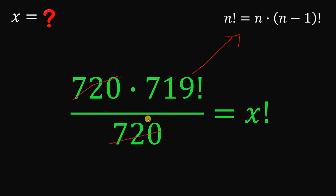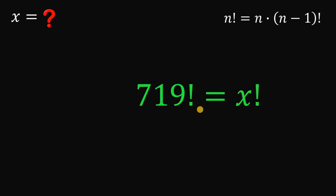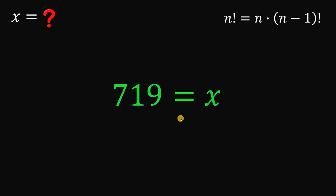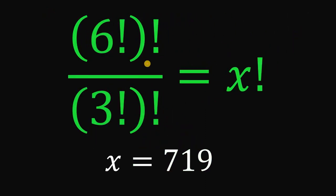This gives us 719 factorial equals x factorial, which tells us that x must be 719. Therefore, if we have 6 factorial factorial over 3 factorial factorial equals x factorial, then the value of x is 719. And as always, we are done.